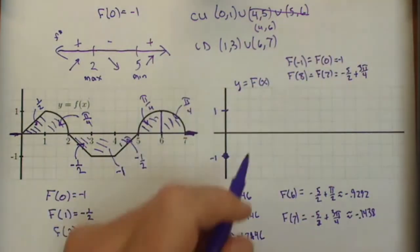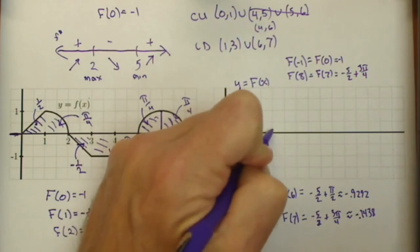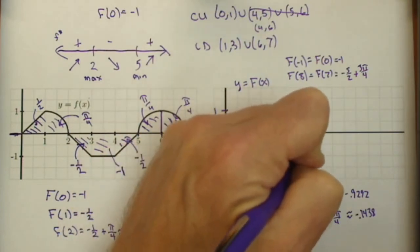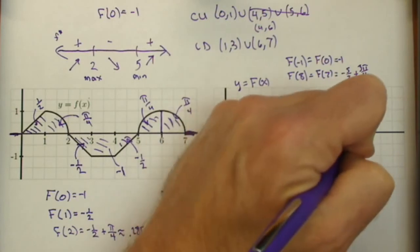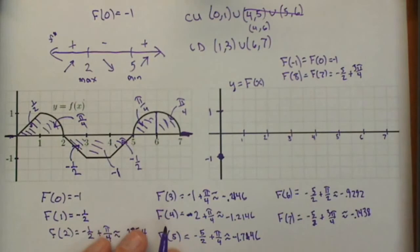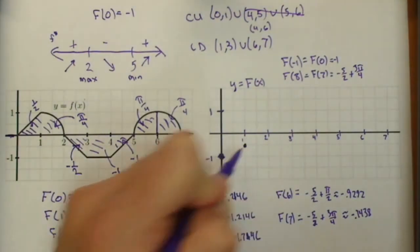We're just going to plot these 7 here and see how they come out. So let's put in our axes 2, 3, 4, 5, 6, and 7. And let's plot our points. f of 0 equals negative 1. We already plotted it. f of 1 equals negative 1 half.